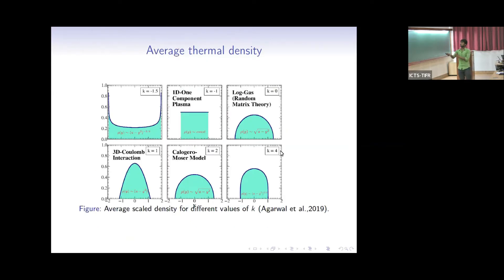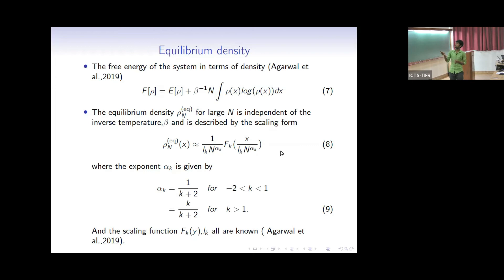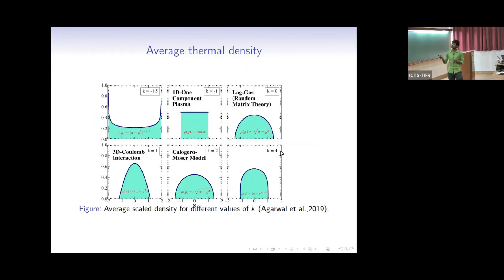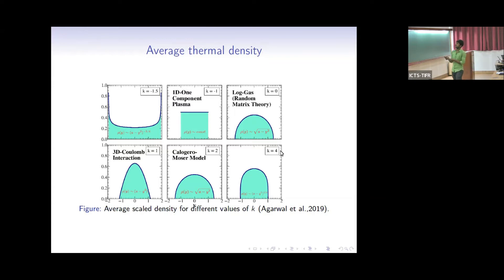Looking at how the scaling function f looks for different values of k: for k equal to minus 1.5, this is an inverted dome shape; for k equal to minus 1, the density becomes uniform; for k equal to 0, this is the log gas model with a Wigner semicircle distribution; and for k equal to 2, the distribution also takes a Wigner semicircle form, though the exact forms are different.